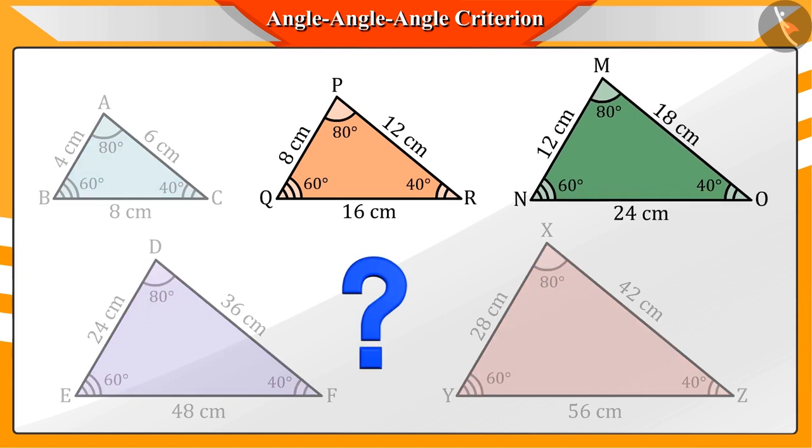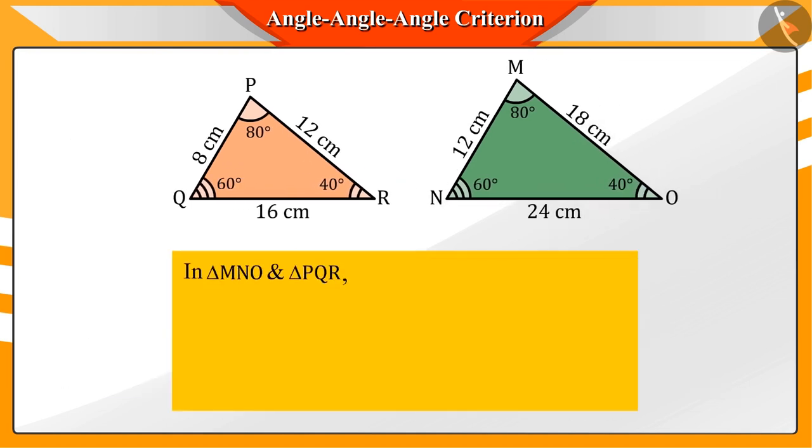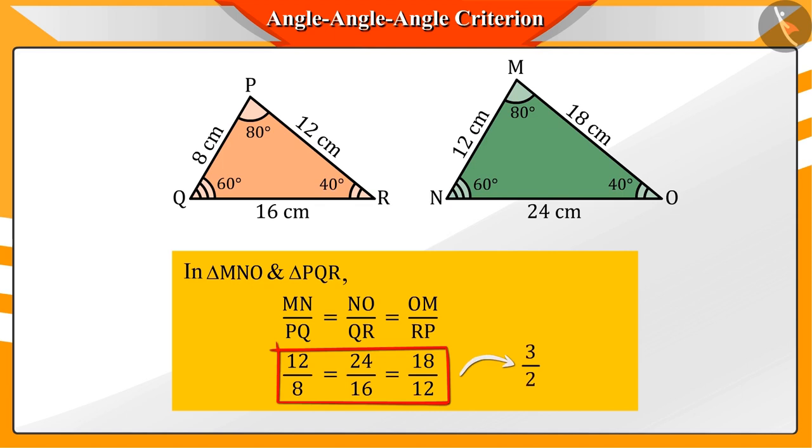Can you tell the ratio of the corresponding sides of triangles MNO and PQR? If we look at these two triangles MNO and PQR, then we see that the ratio of the corresponding sides is 3 by 2.